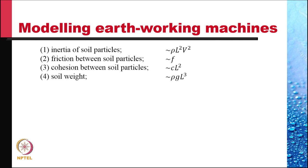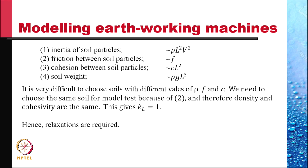Thus, there are four laws that need to be modeled. The inertia of the soil particle is like ρL²V². The friction between soil particles is modeled by f, the coefficient of friction. The cohesion between soil particles is like cL², where c is the cohesive coefficient. And the soil weight, which is like ρgL³. It is very difficult to choose soils with different values of ρ, f, and c.